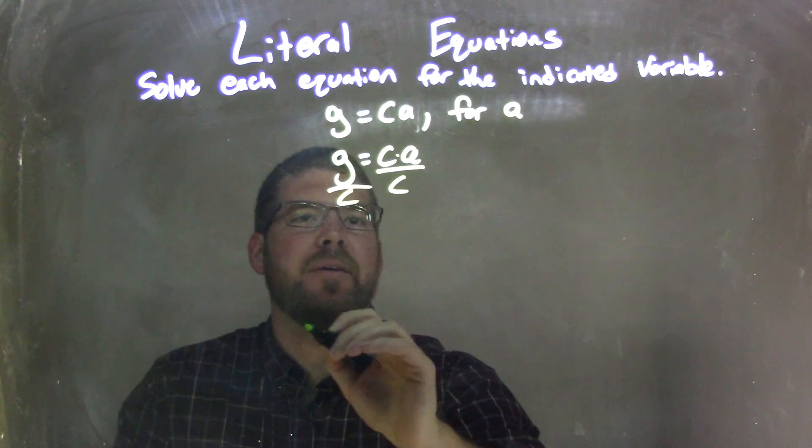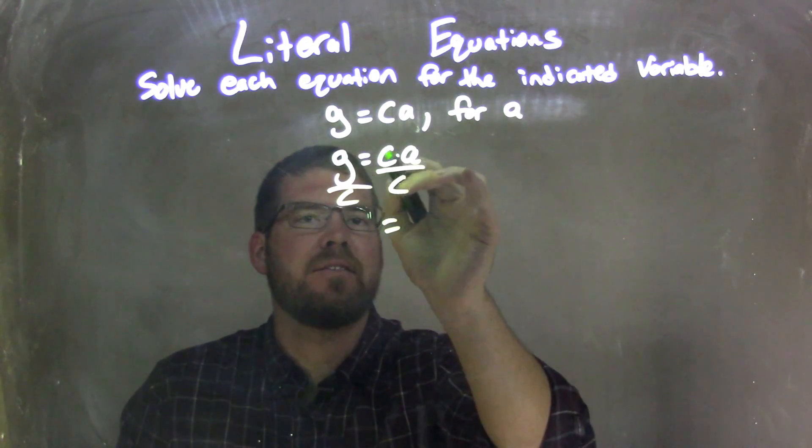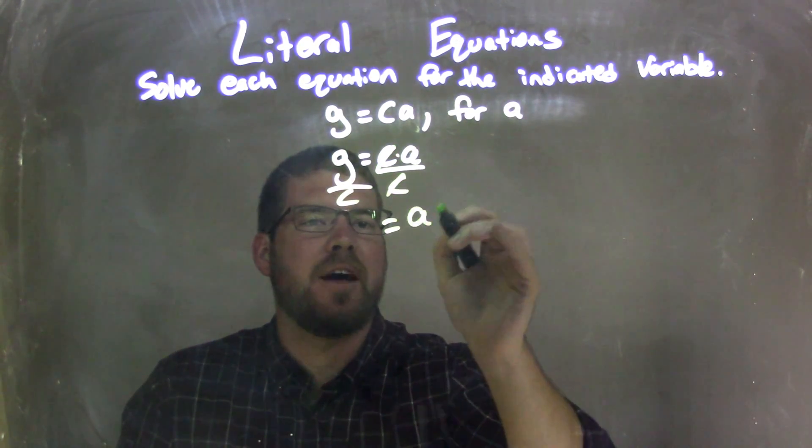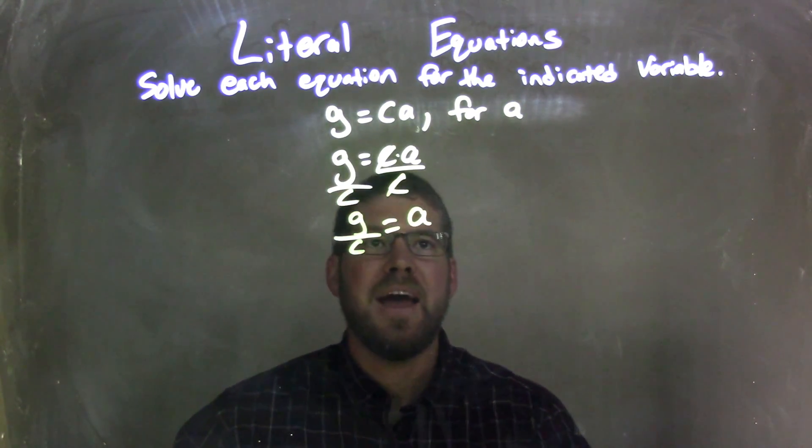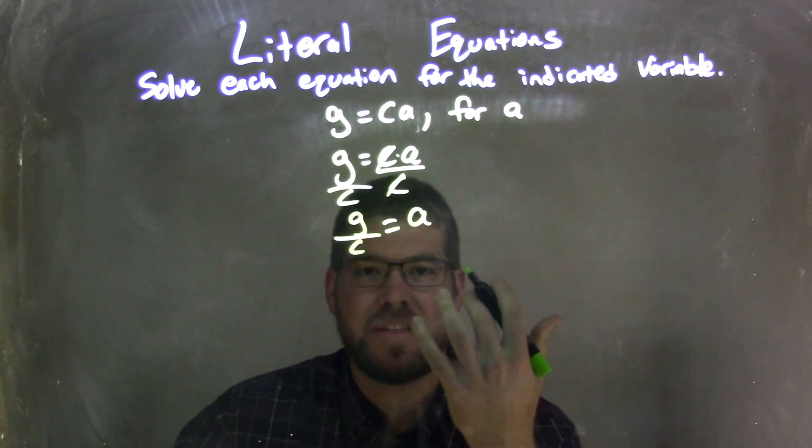I'm going to divide both sides by C. What that does is it eliminates the C on the right, giving me just an A by itself, and then I have a G over a C on the left. A is already isolated. Fantastic, that's what I was looking for.